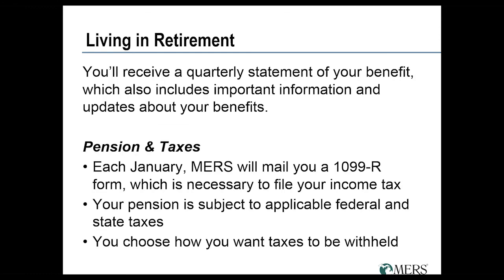A few things change about your relationship with MERS once you're in retirement. Currently you receive an annual statement; once in retirement you'll start receiving quarterly statements with all tax withholding information. Keep in mind there will still be taxes to pay in retirement — we withhold the 4.25% Michigan income tax if you're living in Michigan, and we withhold your federal income tax based on the information you give us on your retirement application. Each January you'll receive a 1099-R from MERS, which replaces your W-2.